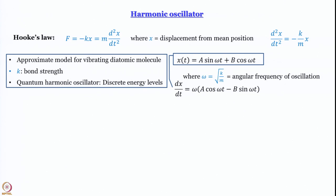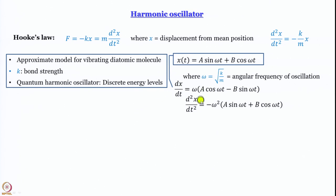We are interested in the second derivative. Differentiating once more, d²x/dt² = -ω²(A·sin(ωt) + B·cos(ωt)) = -ω²·x(t). We get back x(t) — it is an eigenvalue equation. Comparing with d²x/dt² = -(k/m)x, it is clear that -k/m = -ω², or ω = √(k/m), confirming our trial solution.